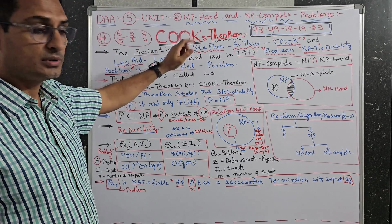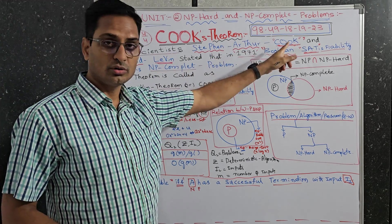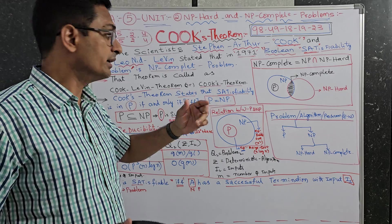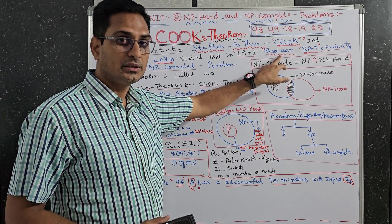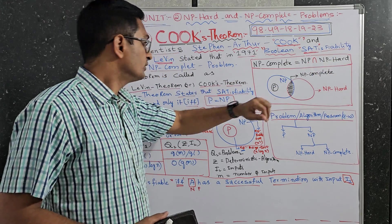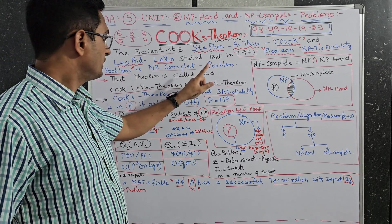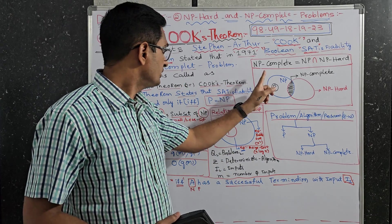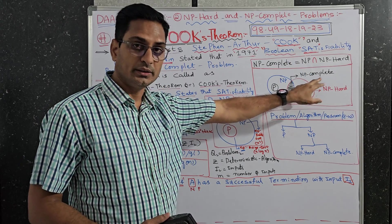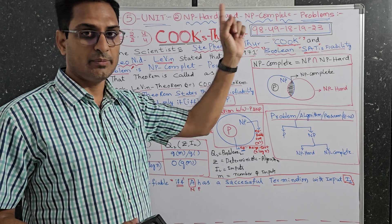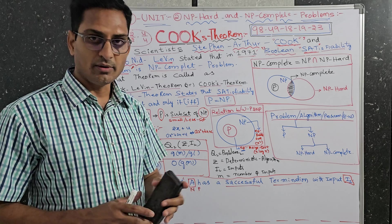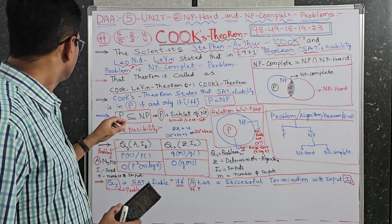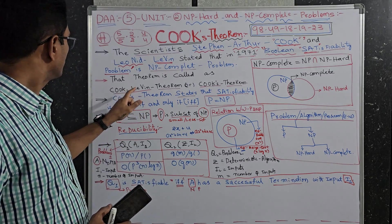See here, this is a scientist named Cook's. Actually two scientists: Stephen Arthur Cook, one scientist, and Leonid Levin stated that in 1971, Boolean means 0s and 1s inputs. Satisfiability that satisfies an algorithm or problem is an NP-complete problem. This will be a little bit tough topic, but you will come to know at the end.